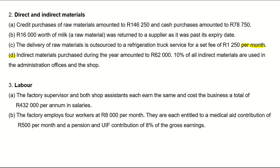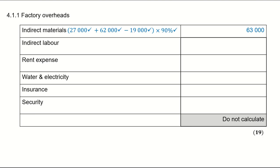Moving on to labour. The factory supervisor — indirect labour — and both shop assistants cost the business a total of 432,000 per annum. I only need the salary of the factory supervisor, which goes to indirect labour and forms part of factory overheads. So: 432,000 ÷ 3 = 144,000 for the factory supervisor's salary.